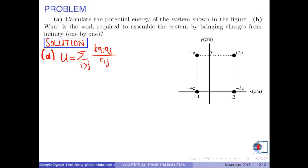u equals sum over i greater than j, k times qi times qj over rij, where rij is the distance between qi and qj.